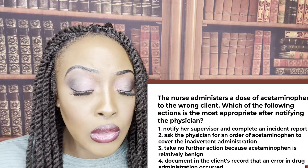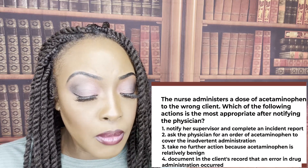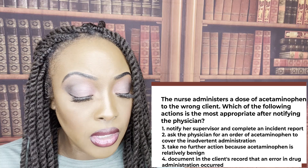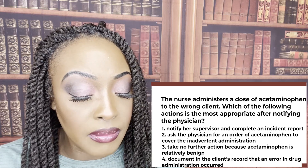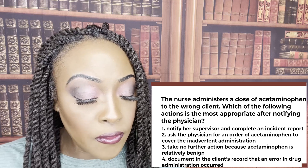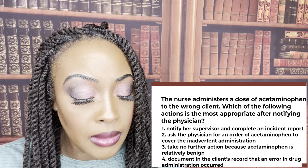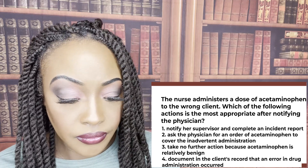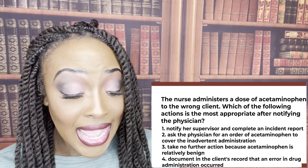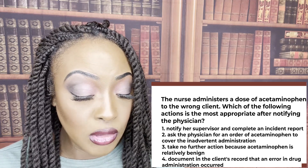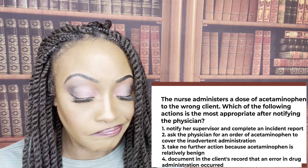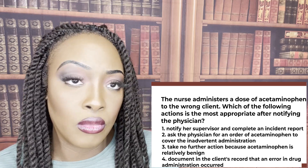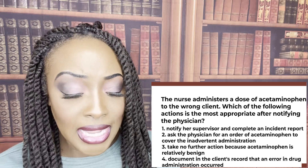The nurse administers a dose of acetaminophen to the wrong client. Which of the following actions is most appropriate after notifying the physician? One, notify the supervisor and complete an incident report; two, ask the physician for an order of acetaminophen to cover the inadvertent administration; three, take no further action because acetaminophen is relatively benign; or four, document in the client's record that an error in drug administration occurred. The correct answer is one — notify a supervisor and complete an incident report.